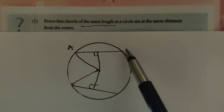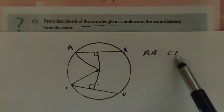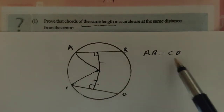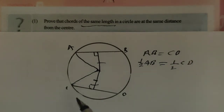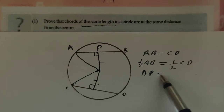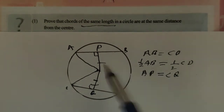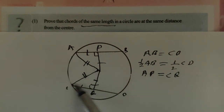Given that chord AB equals chord CD. We want to prove that the perpendicular distances are equal — that is not given, it must be proven. Comparing the two right triangles: if AB equals CD, then half of AB equals half of CD. Let P be the midpoint of AB, so AP equals half of AB, and let Q be the midpoint of CD, so CQ equals half of CD. Therefore AP equals CQ. Also, the two hypotenuse sides of the triangles are equal because they are radii of the same circle.